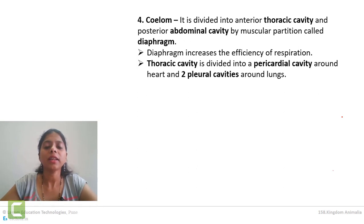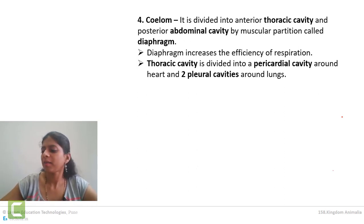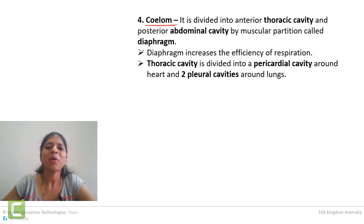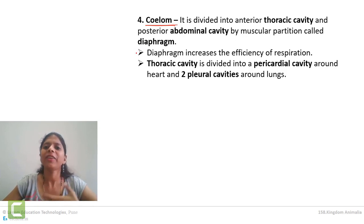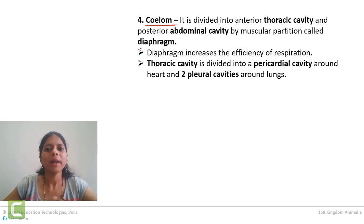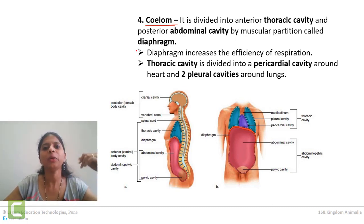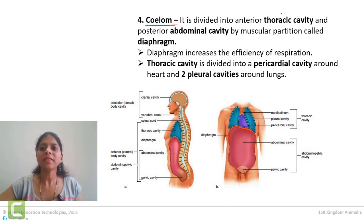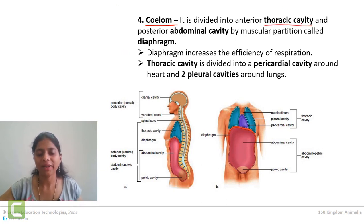Next, an important characteristic is about the coelom — the body cavity. In mammals, the body cavity is divided into two parts: the chest region is the thoracic cavity and the stomach region is the abdominal cavity. The heart is located in the thoracic cavity and the lungs are also located in the thoracic cavity.